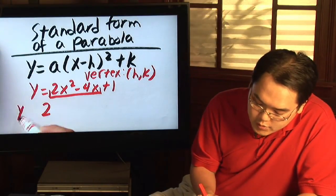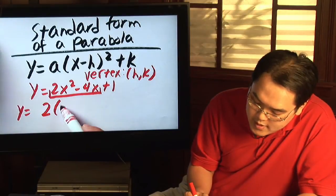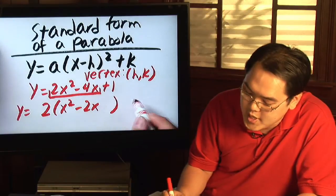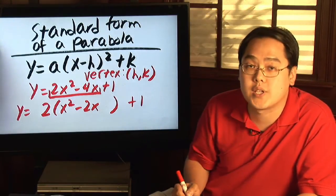So y is equal to 2 times x squared minus 2x, and then you close the parentheses, but you leave that plus 1 outside.